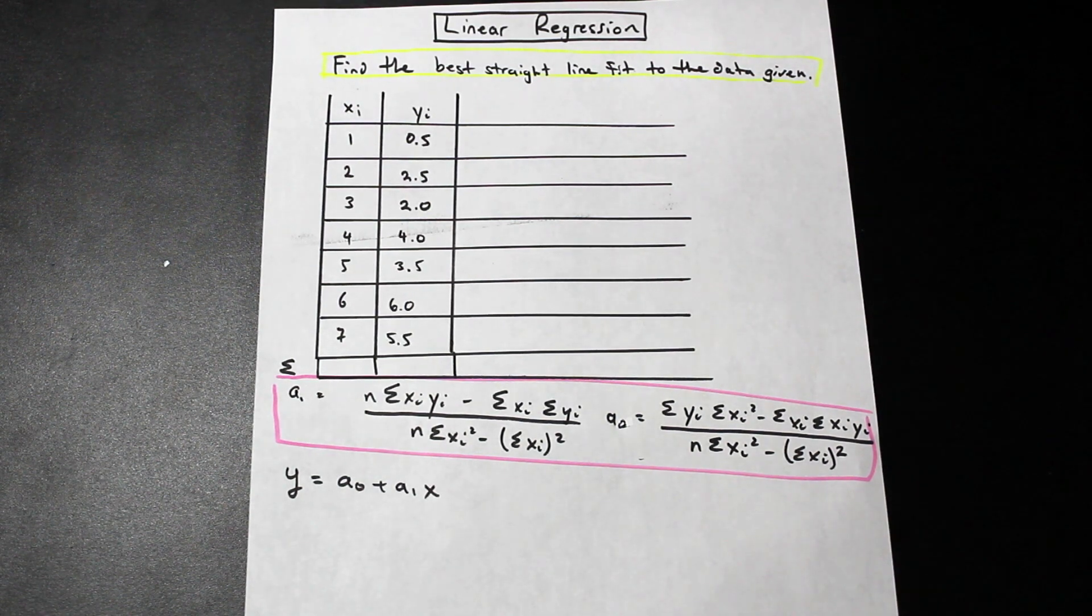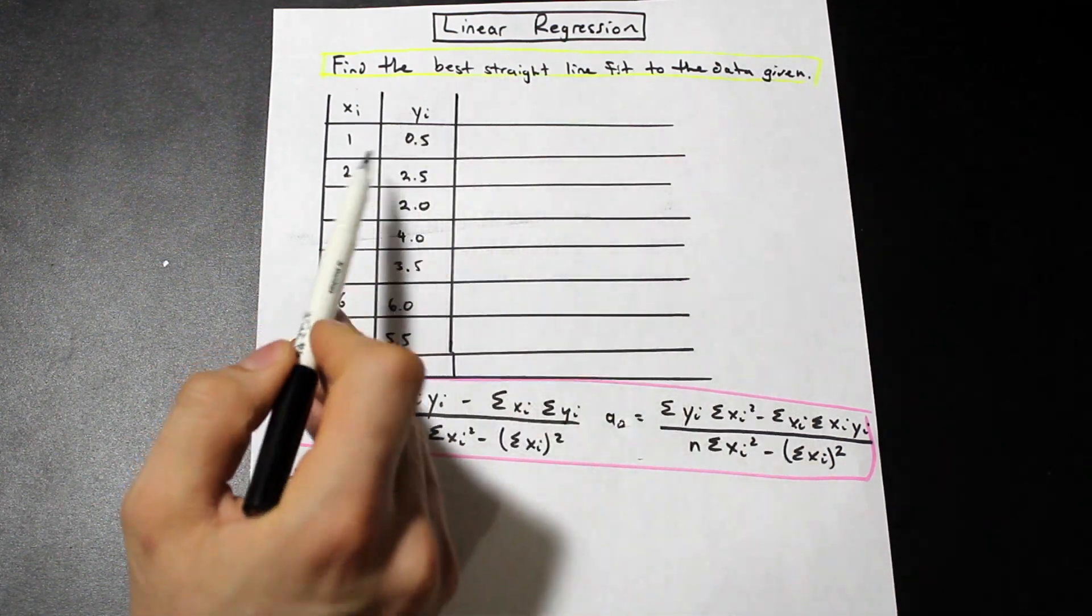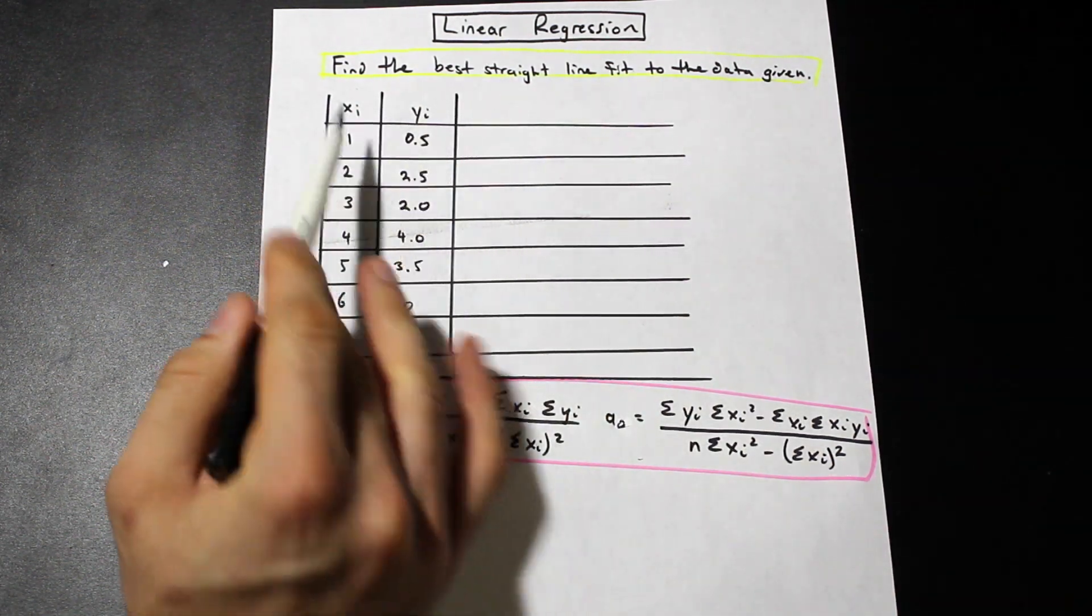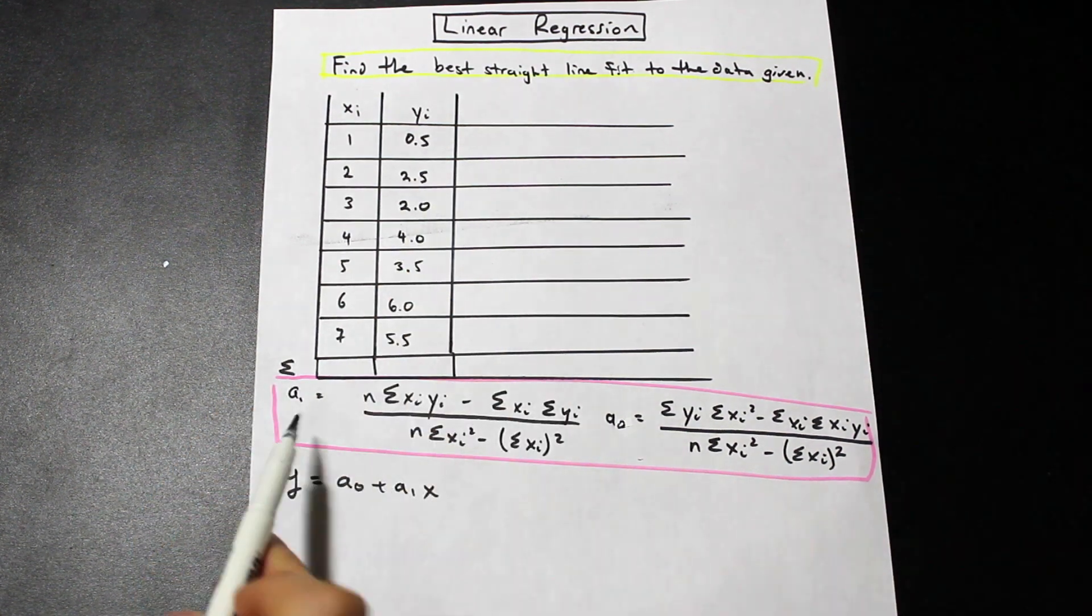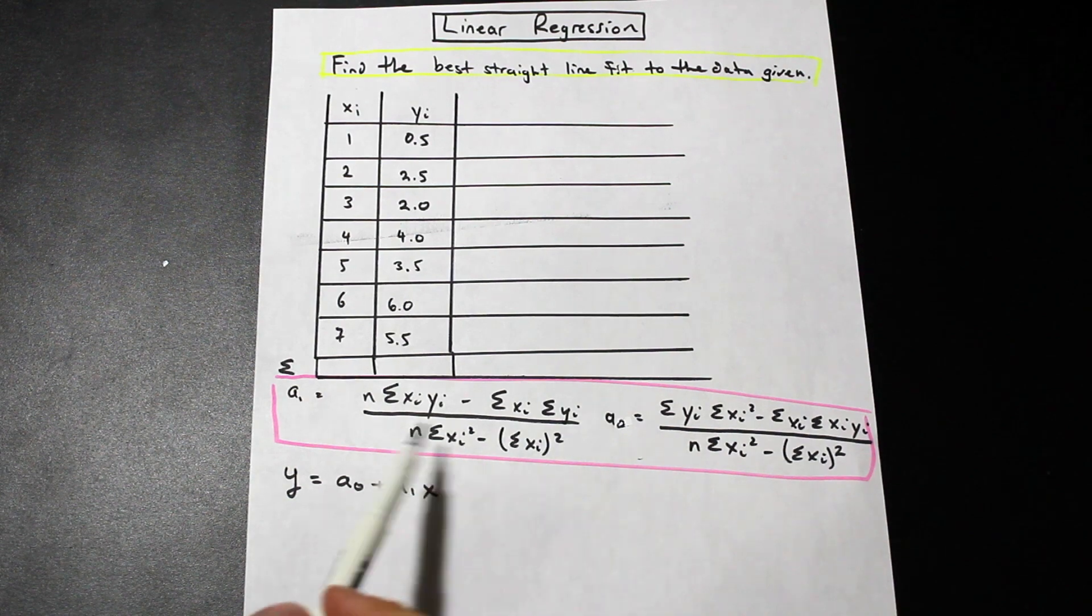In this question, we're asked to find the straight line of best fit. We're given a set of x values, and with those x values there are y values. We're given two formulas here, and these will be given to you on the test, obviously.